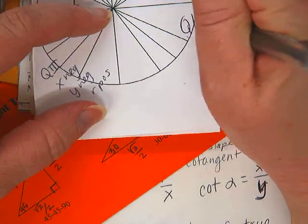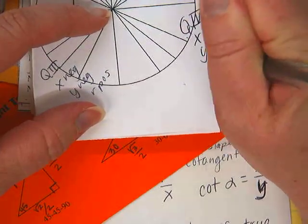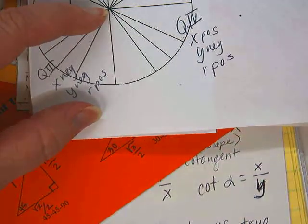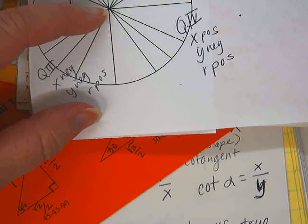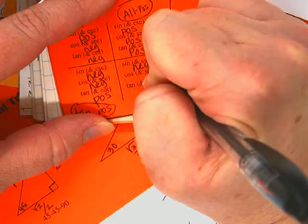Okay. And then in the last quadrant, quadrant 4, we have x is positive, y is negative, and r is always positive. So what's negative and positive? Sine uses y, so that will be negative, correct?